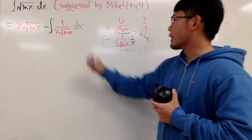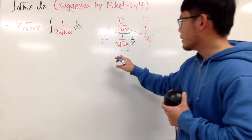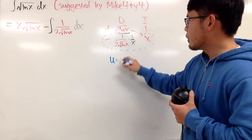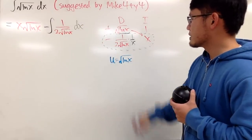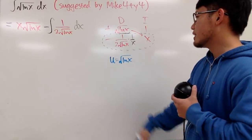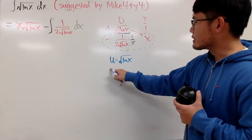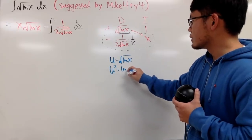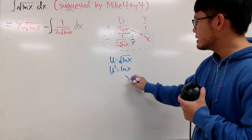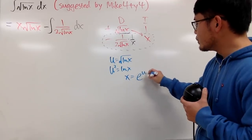Anyway, to do u-substitution right here, just this integral, I will let u equal the square root of natural log of x. This is just u-sub. And then, just do the usual business. I would like to solve for x first, though. Perhaps I'll square both sides, so I get u-squared is equal to natural log of x, and then do e to the power on both sides. x is equal to e to the u-squared.